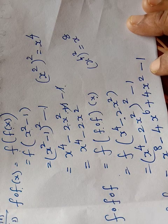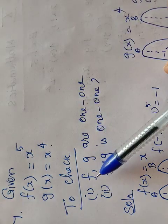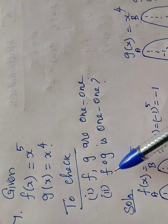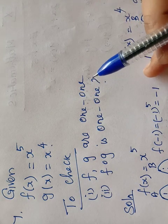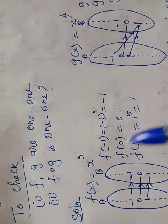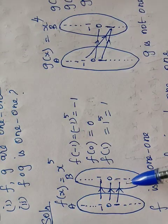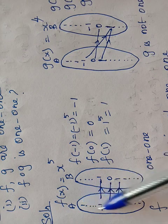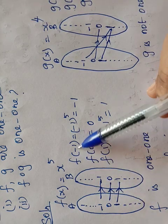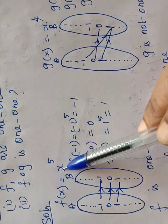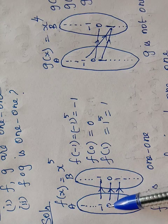Question 4: f of x equal to x power 5, g of x equal to x power 4. They ask to check if f and g are one-one functions, and also whether f composite g is one-one or not. The definition of a one-one function is that distinct elements have distinct images. For f of x equal to x power 5, using an arrow diagram with elements minus 1, 0, 1: minus 1 maps to minus 1, 0 maps to 0, 1 maps to 1. Different elements have different images, so f is a one-one function.